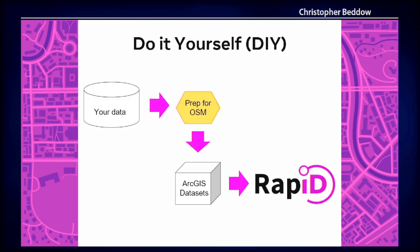And you can do this yourself. Just a quick review in diagram form: you start with your data, it gets prepped for OSM — handled usually in the Esri domain — and then it becomes an ArcGIS dataset, merges out into Rapid, and is available for OpenStreetMap.